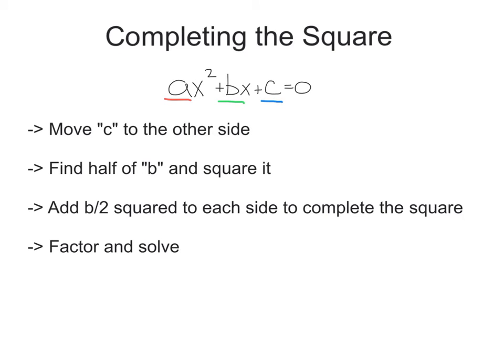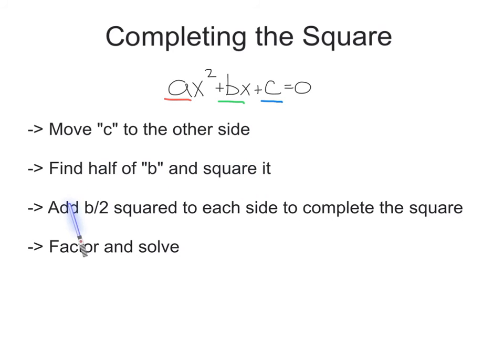To summarize the process of completing the square: whenever you have a quadratic equation, move the c term to the other side, find half of your b term — half the coefficient of x — and square it. Add that number, (b/2) squared, to each side to complete the square. Then factor and solve.